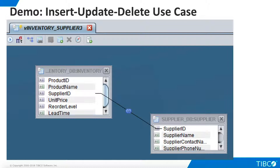Now we tackle the more ambitious use case. The inventory-supplier view federates data from two physical data sources; its logical key is a concatenation of product ID and supplier ID. Most importantly, in this use case we need to synchronize updates and deletes in addition to inserts.